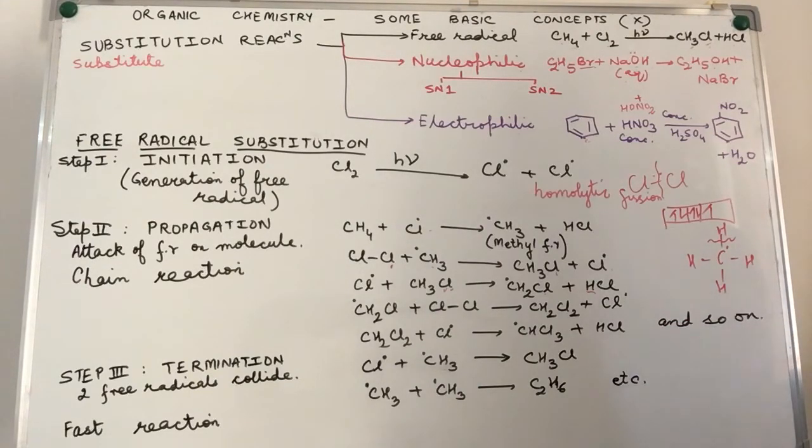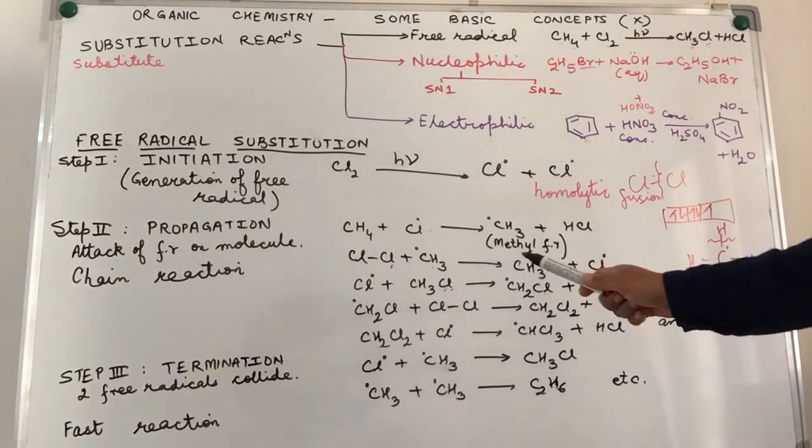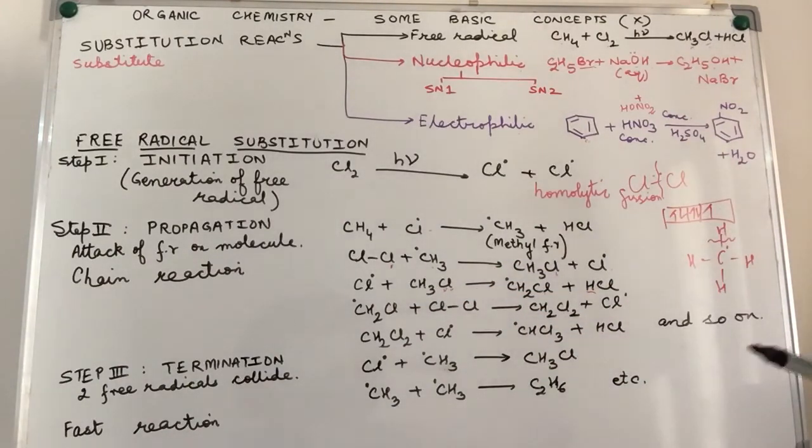So, it takes up the hydrogen from CH3Cl with a result CH2Cl free radical is our byproduct in this and HCl is our side product. Now, CH2Cl, again it goes around, it wants to pair up.